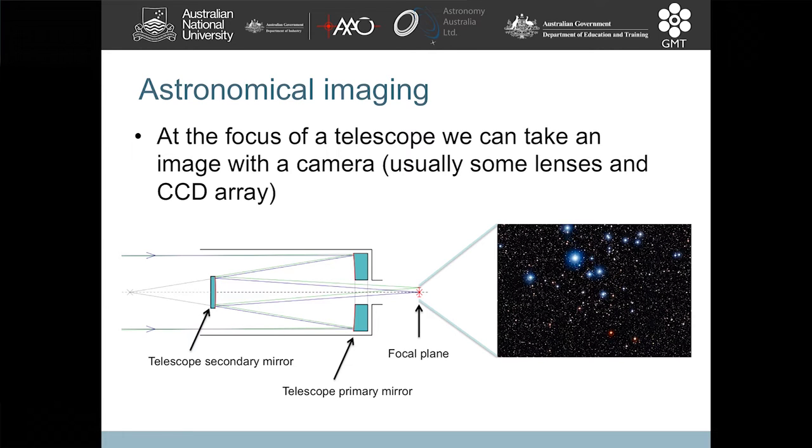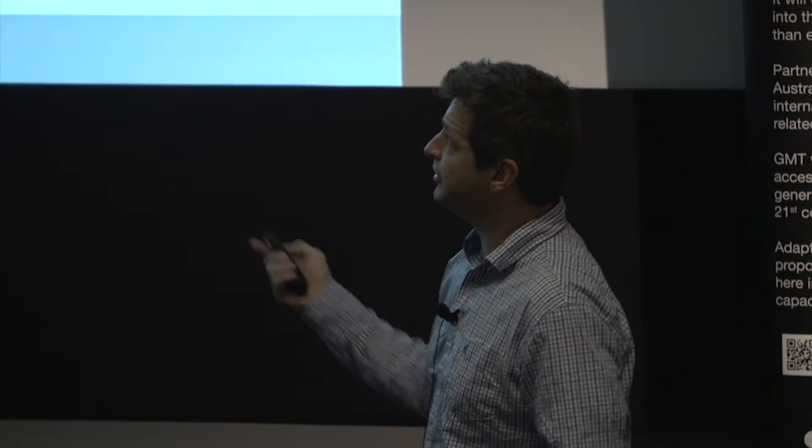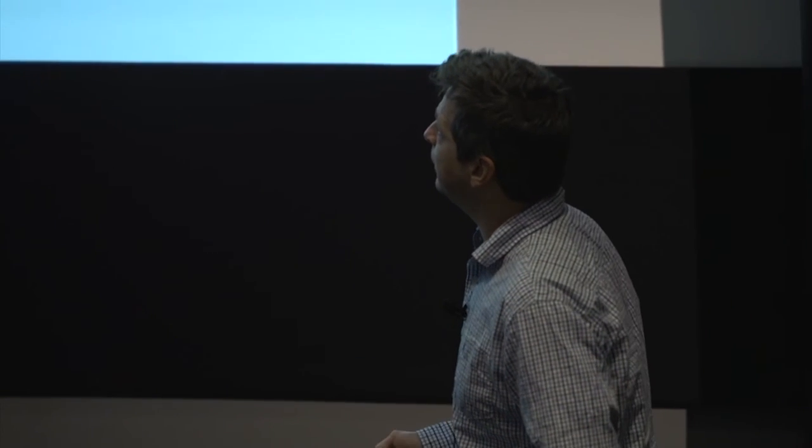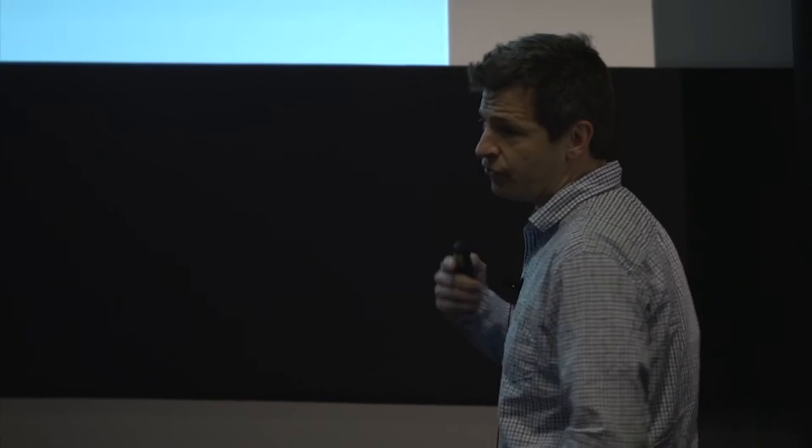Simple, how any simple imaging camera works. What we find at the focal plane here is a view of the sky. Depending on these optics, the scale, adjust the scale appropriately. So what we then do is put a CCD array and probably some form of lenses, and then we can take some nice, usually impressive image. This is something that the GMT could do. This is what you're familiar with from lots of telescopes like Hubble.